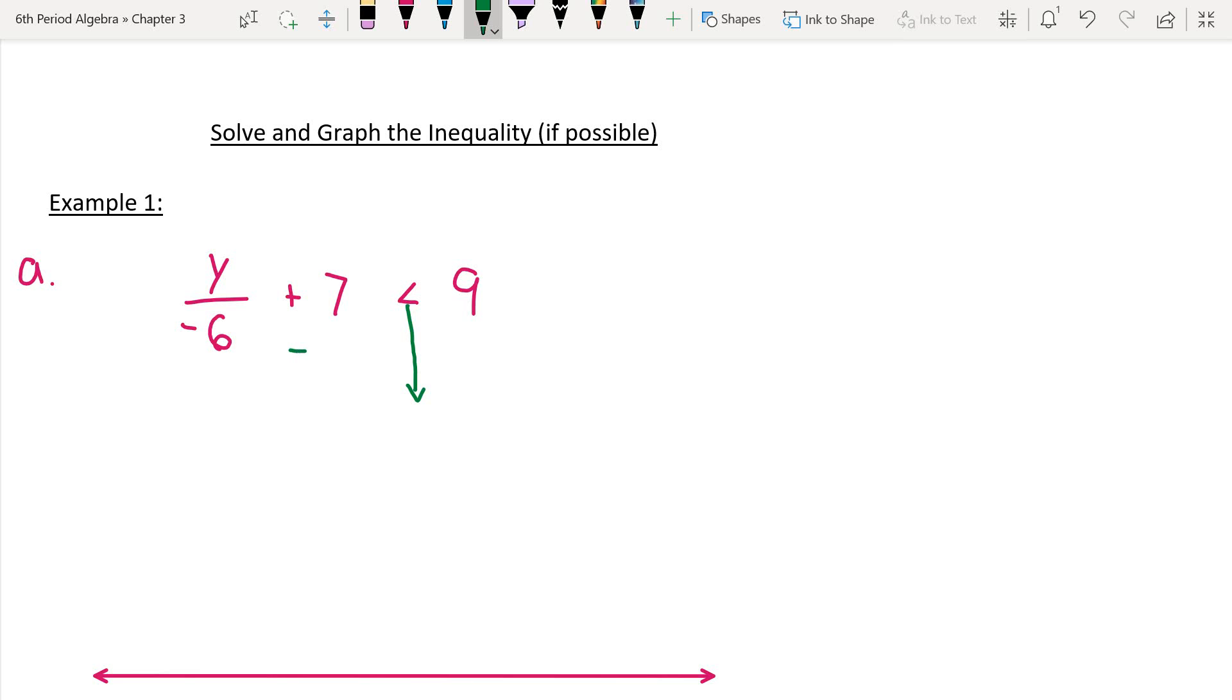This would now leave me with y over negative 6. And then on the right, 9 minus 7 is 2. Now, right here, to get my y by itself, I have to undo the division. Fractions or division. And when I do that, I'm multiplying by a negative number. It's a negative 6. And so, when I do that on both sides, what happens is this inequality symbol flips around. And instead of being less than, it becomes greater than. So, I am automatically fixing that so I don't forget it later on. So, now I have y greater than, and then 2 times negative 6. A positive times a negative is a negative. 2 times 6 is 12.